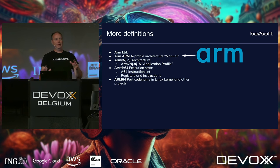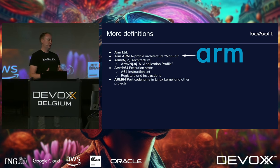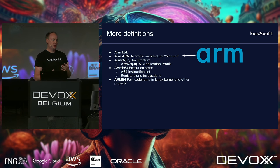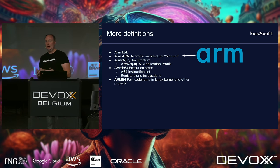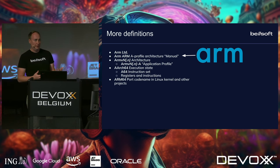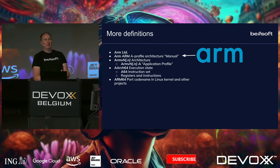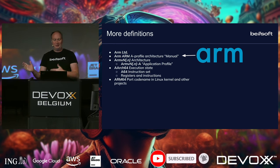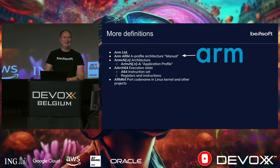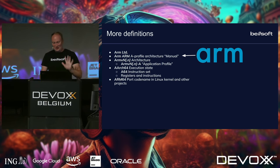We can talk about the instruction set, search for a specific instruction — what it means and how it should be encoded — by referring to the A64 manual. It's not as boring as trying to understand what Intel instructions mean; it's much easier, typically.